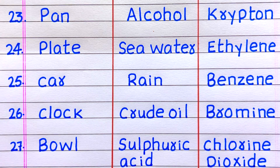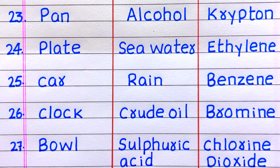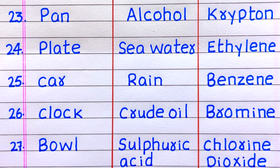Twenty-seventh liquid is sulphuric acid. Twenty-third example of a gas is krypton, twenty-fourth ethylene, twenty-fifth benzene, twenty-sixth bromine, twenty-seventh chlorine dioxide.